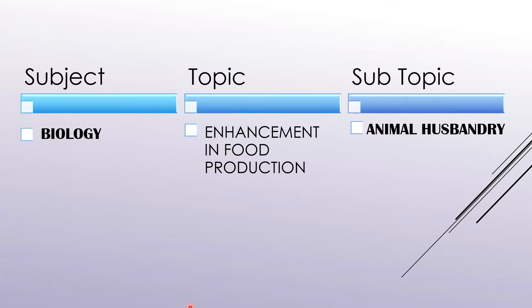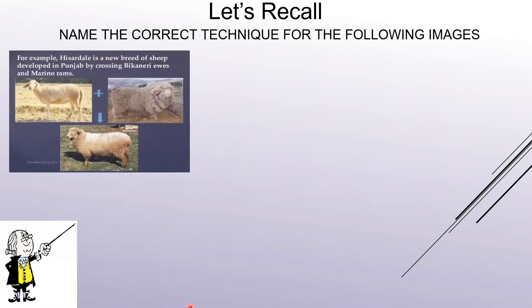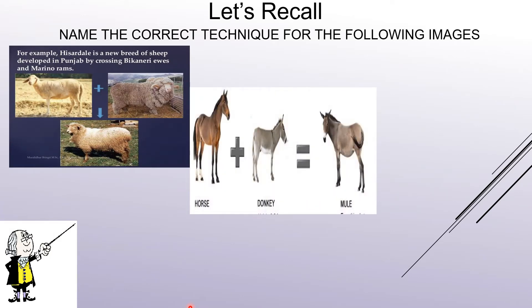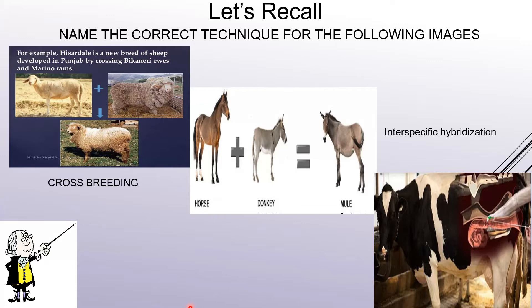Before we proceed, let's revise what we studied in the last module. I am going to show you some images; you are supposed to write down the correct technique. Your very first image represents cross-breeding, your second image represents inter-specific hybridization, and the third image represents artificial insemination technique — all three methods studied in module part 3.